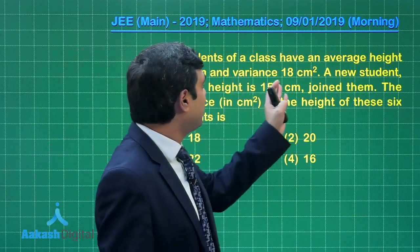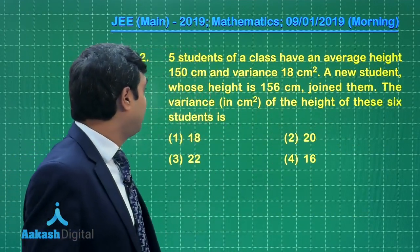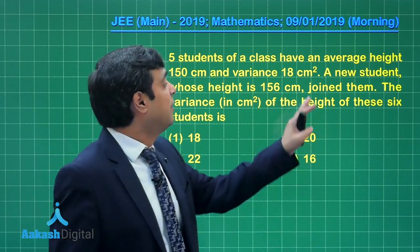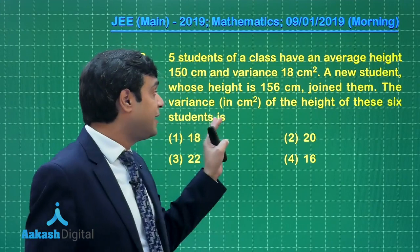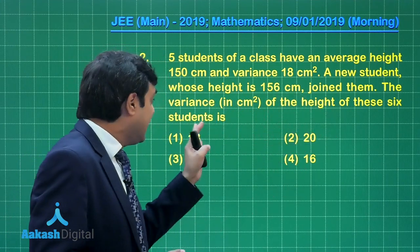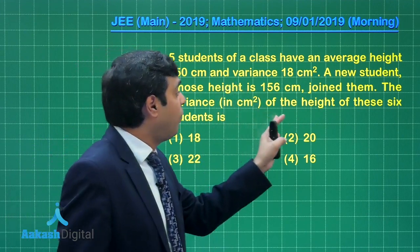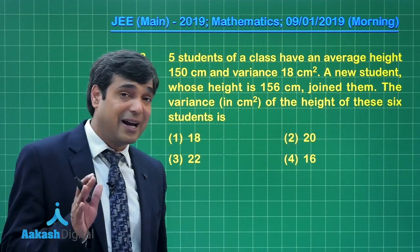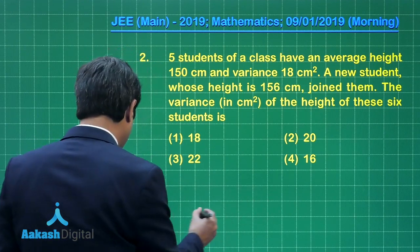Five students of a class have an average height of 150 centimeters and variance 18 cm². A new student whose height is 156 centimeters joined them. The variance in cm² of the height of these six students is... This is a question from statistics.